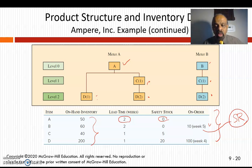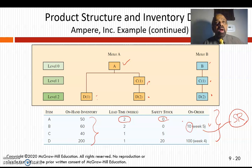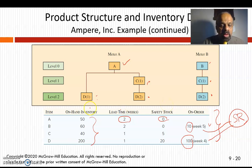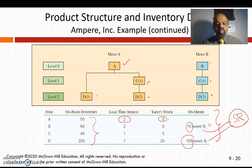Those existing orders are called scheduled receipts. For example, 10 units of B will be delivered in week 5, and 100 units of D will be delivered in week 4 — these are scheduled receipts already in the system. So we have lead times, safety stock, on-hand inventory, and scheduled receipts — all of which we'll use to develop the MRP plan.